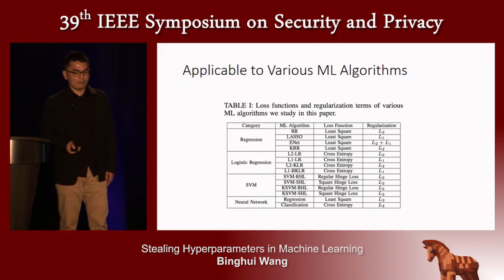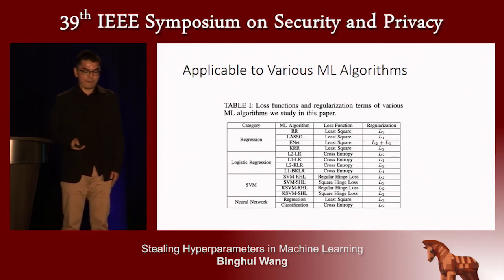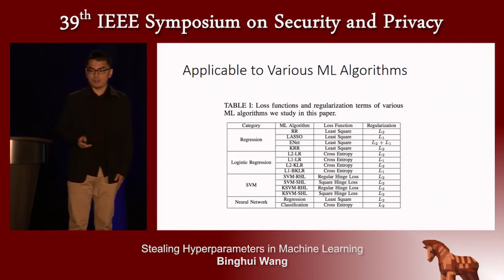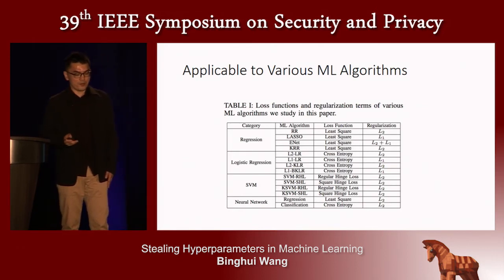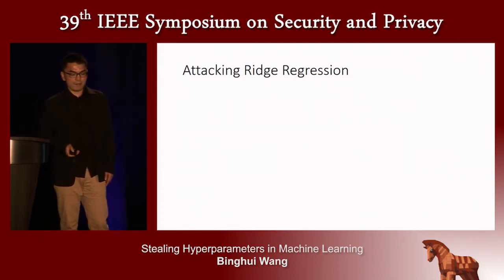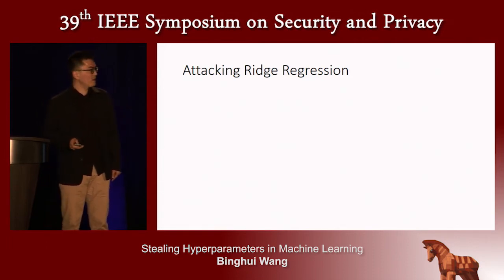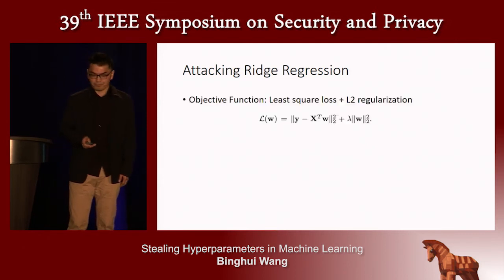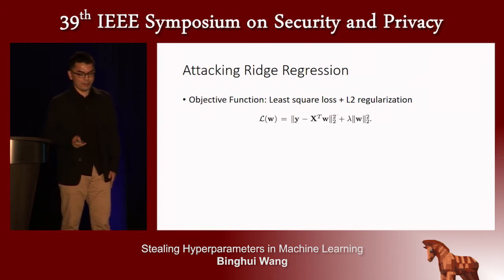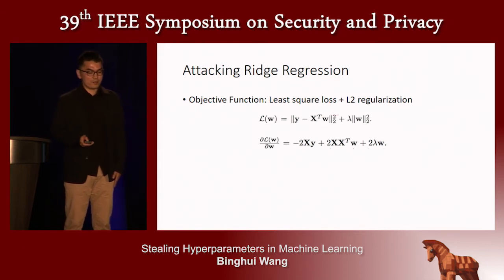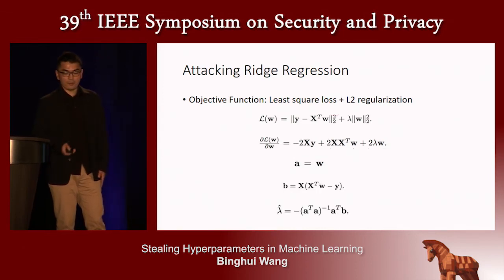Our attack is applicable to various machine learning algorithms—regression algorithms like ridge regression and kernel regression, classification algorithms like logistic regression and support vector machine, and also neural networks. Taking ridge regression as an example: its objective function has a least squares loss and L2 regularization. We set the derivative with respect to the model parameters to zero, derive the form of A and B, and obtain the estimated hyperparameter.